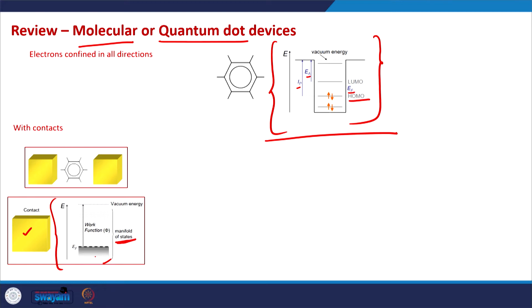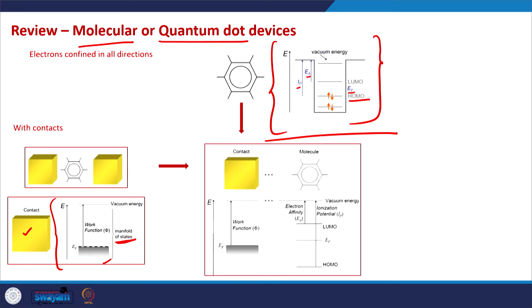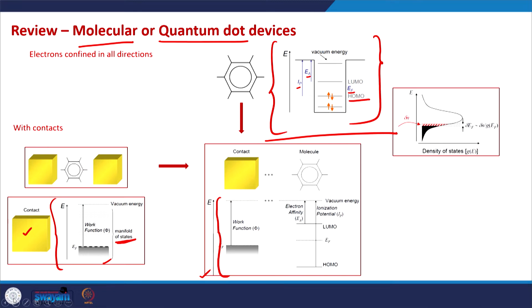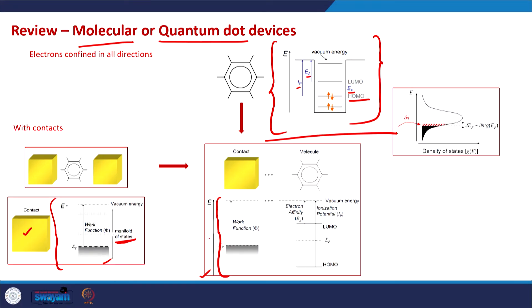This is a very simplistic modeling of a metallic bulk contact. When we put a contact in touch with a quantum dot or a molecule, we obtain a system in which we have a continuum of energy states in touch with discrete energy states.